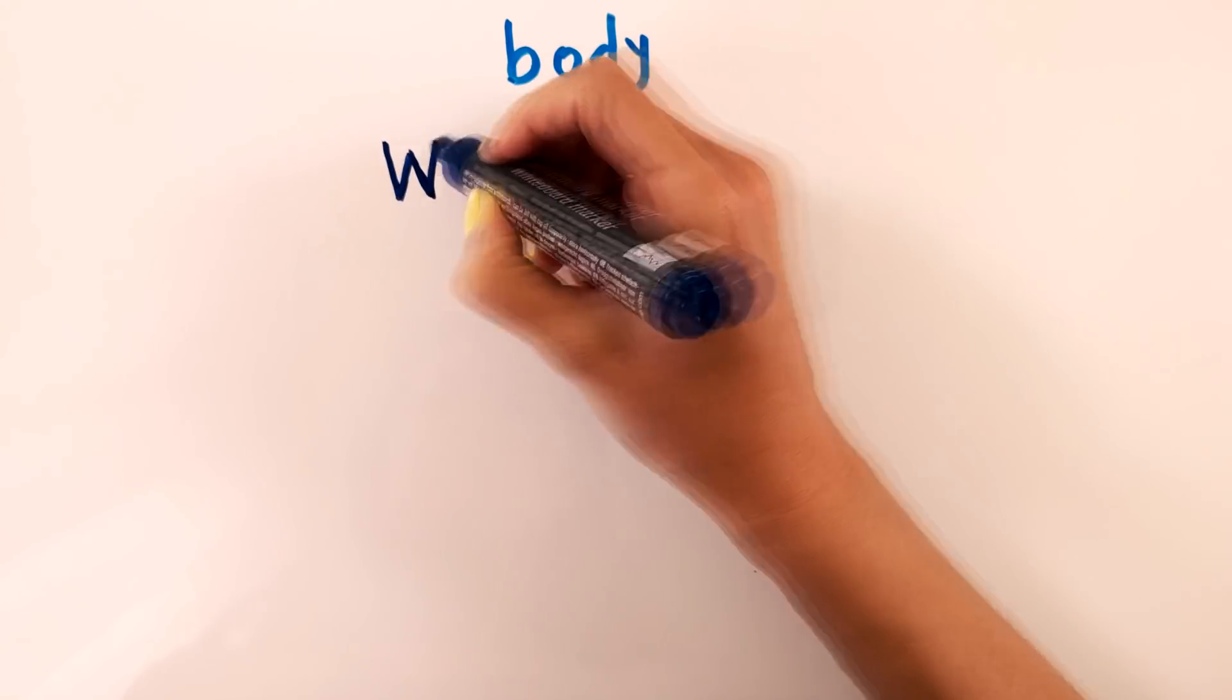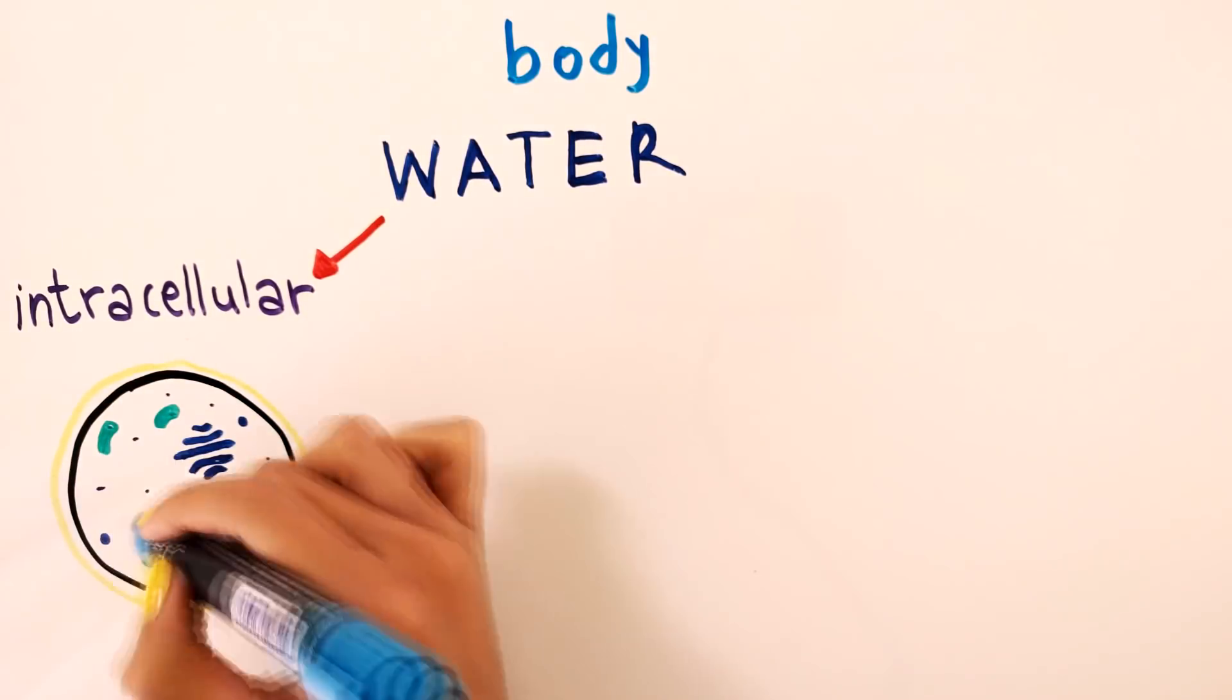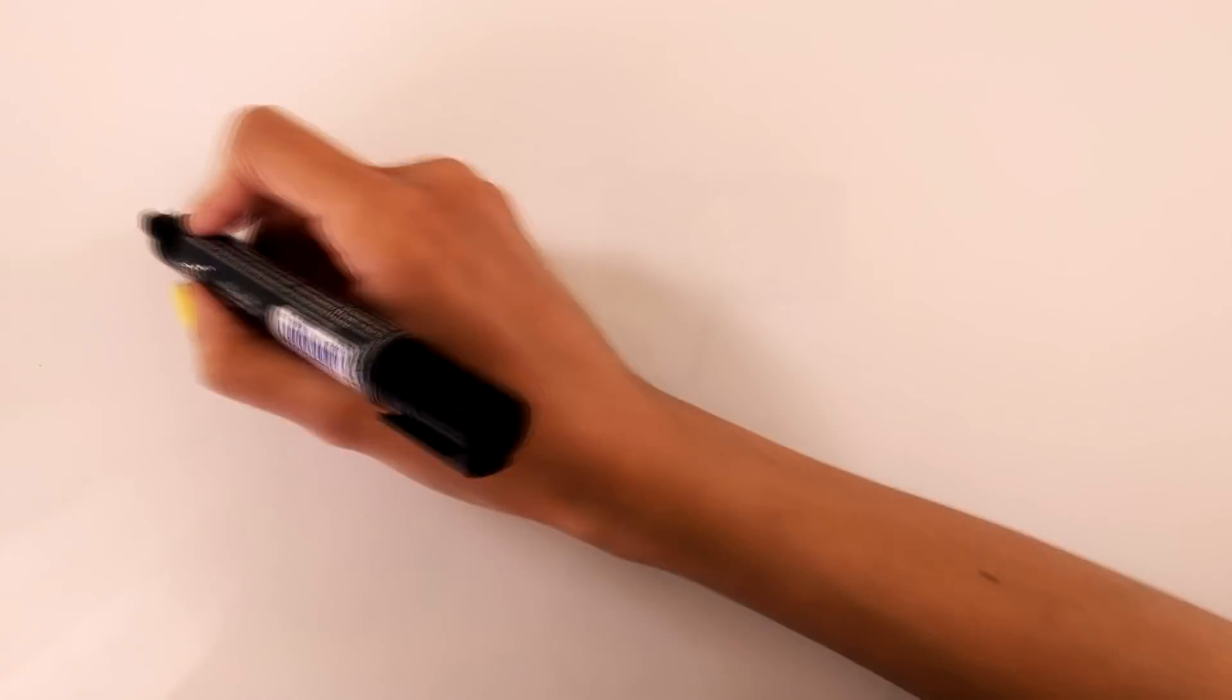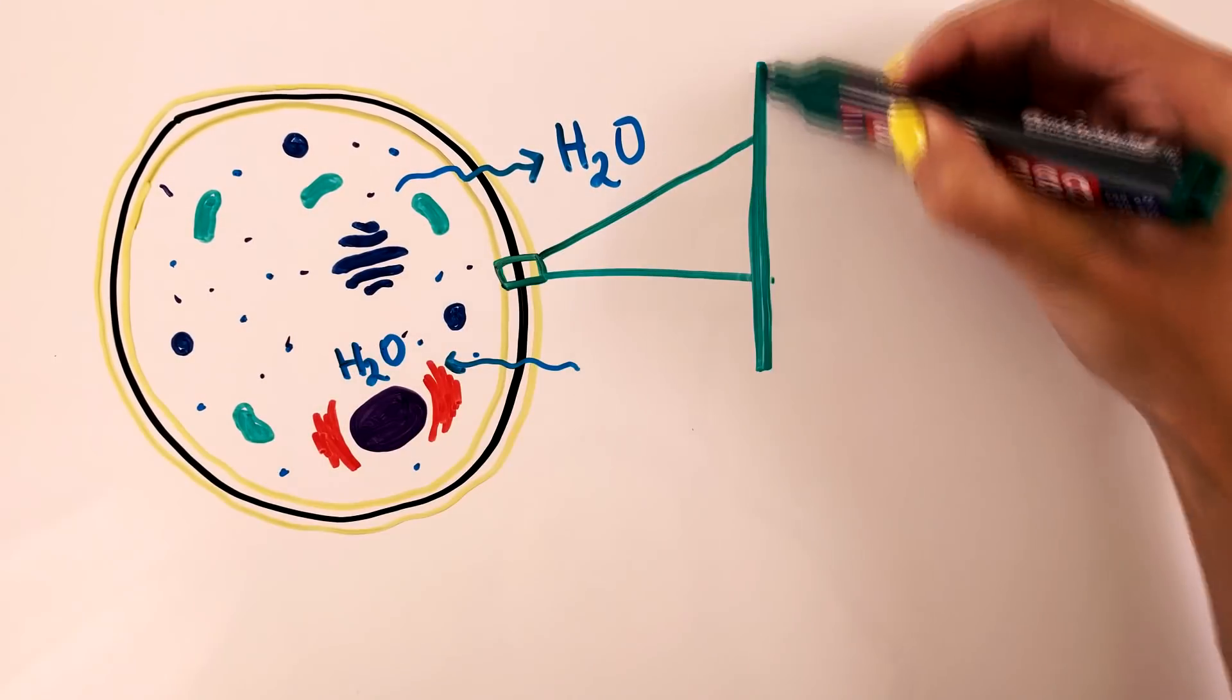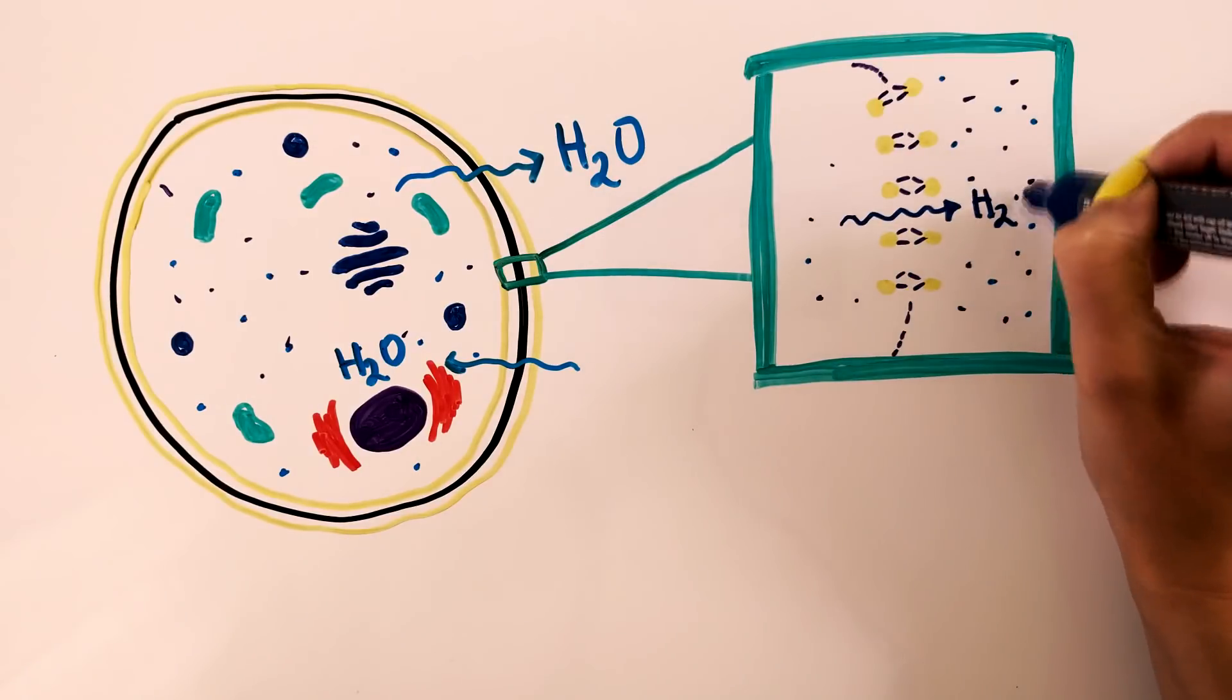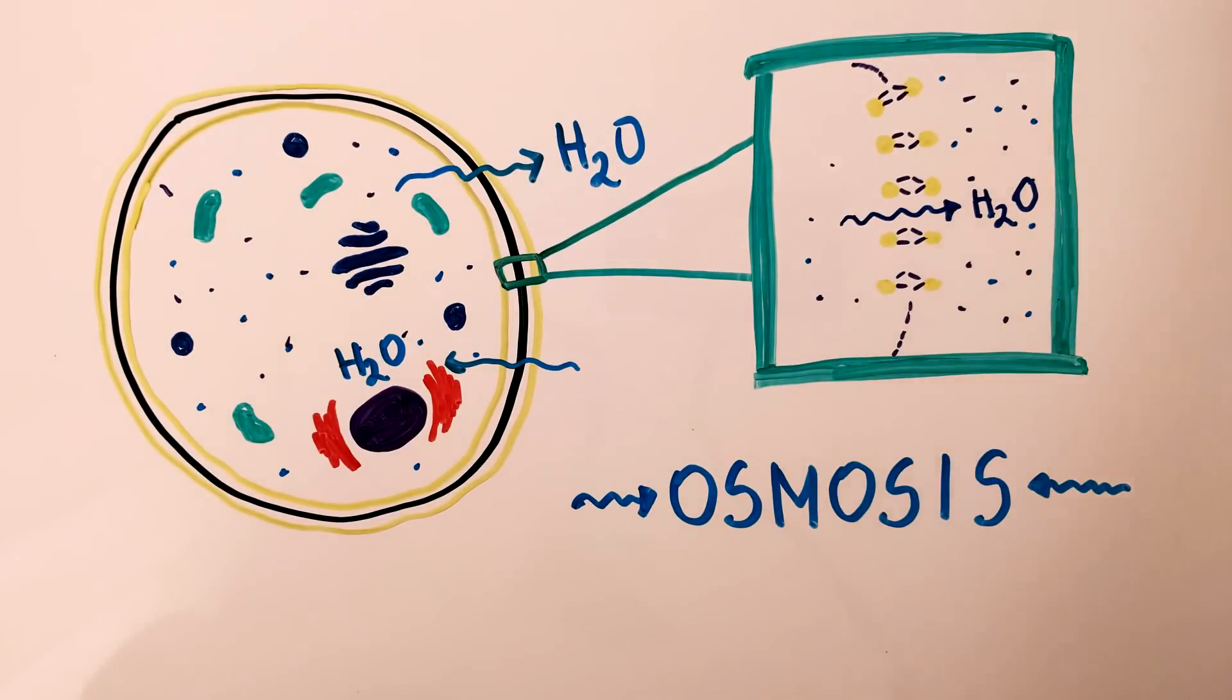But when we say body water, what does that really mean? The total amount consists of two compartments. Intracellular, inside the cells, and extracellular, outside the cells as in blood and fluid in between cells. Movement of water molecules through a selectively permeable membrane such as a cell membrane from a less concentrated region into a more concentrated one is known as osmosis. By this process, water tends to equalize the concentration of solute on the two sides of the membrane.